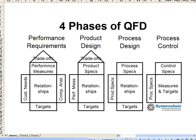In the first phase, you start out with your customer requirements in the rows and then you look at the relationships between those customer requirements and the performance measures in the columns. The top of the house defines trade-offs where one performance measure might complement another or might detract from another. Notice that the only place you do competitive analysis is in phase one.